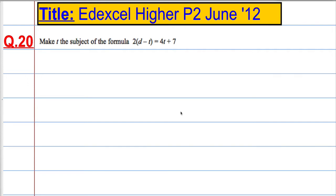We're asked to make t the subject of the formula 2 times (d minus t) equals 4t plus 7. In order to make t the subject of the formula, the first thing I'm going to want to do is collect all terms involving t to one side and everything else to the other.